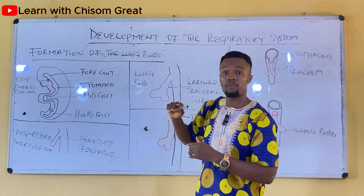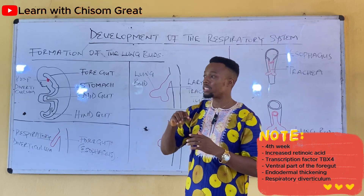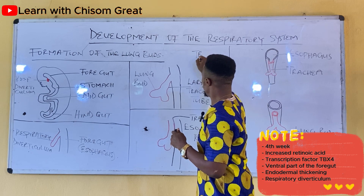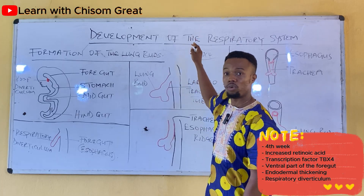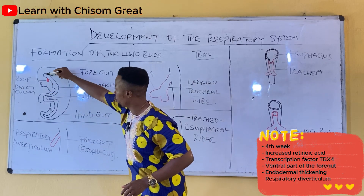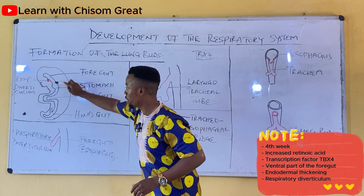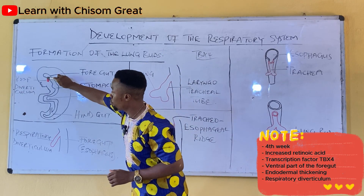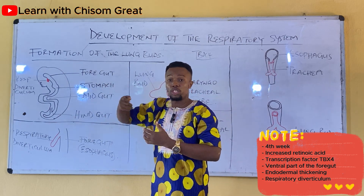Around the fourth week of fetal life, there is an increase in retinoic acid. That increase in retinoic acid causes the transcription factor TBX4 to move to the foregut. This is the foregut; this is the midgut and this is the hindgut — this is the embryo after folding. So TBX4 comes to this part of the foregut where the respiratory organs begin to develop.